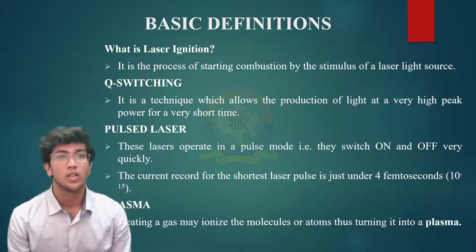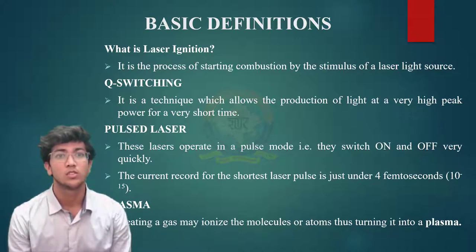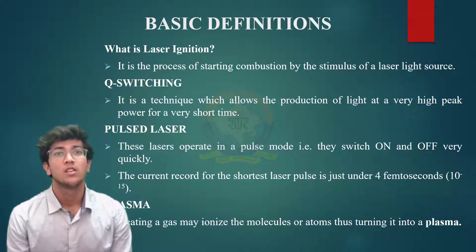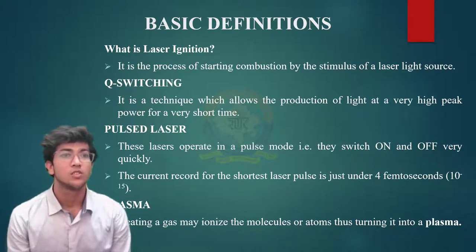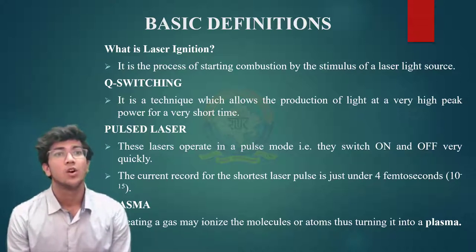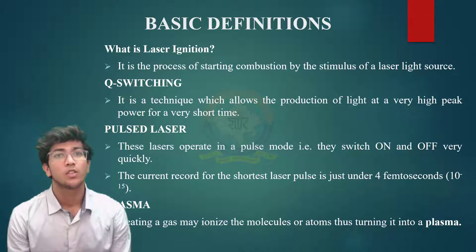Here are some basic definitions. What is laser ignition? It is the process of starting combustion by the stimulus of a laser light source. Laser ignition is an alternative method for igniting mixtures of fuels and oxidizers. The phase of the mixture can be gaseous or liquid. Q-switching is a technique which allows the production of light at very high peak power for a very short time. It is also known as giant pulse formation or Q-spoiling. The technique allows the production of light pulses at extremely high peak power, much higher than would be produced by the same laser operated in continuous wave mode.